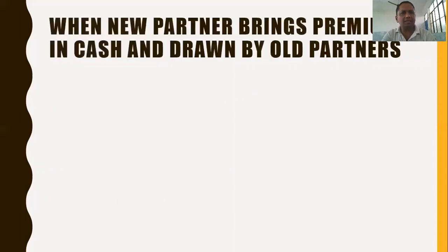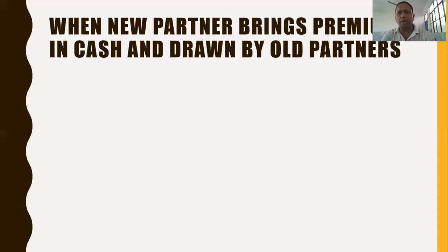The next case is when a new partner brings premium in cash and it is drawn by old partners, or when the new partner brings his share of capital and goodwill in cash. The first journal entry is: Cash or Bank Account debited to New Partner's Capital and to Premium for Goodwill. Then, Premium for Goodwill Account is debited to Old Partners' Capital Account, distributed in their sacrificing ratio.